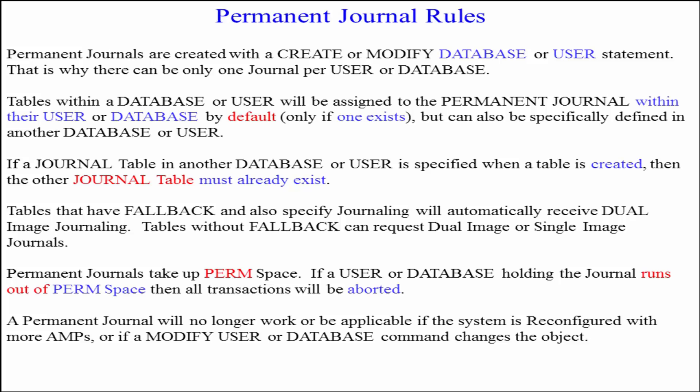Tables within a database or user will be assigned to the permanent journal within their user or database by default, only if one exists, but can also be specifically defined in another database or user. If a journal table in another database or user is specified when a table is created, then the other journal table must already exist.